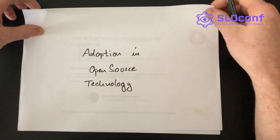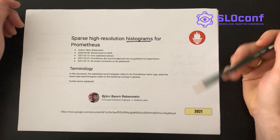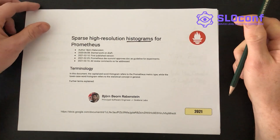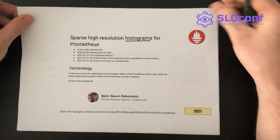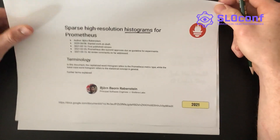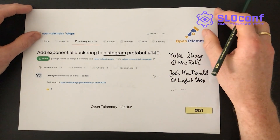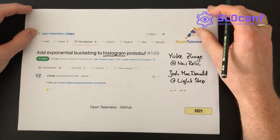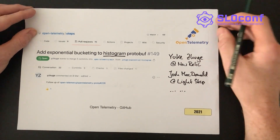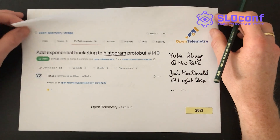The final section covers adoption in open source technology — a very recent development. Björn Rabenstein, also talking at this conference, has a proposal for inclusion of sparse high-resolution histograms in Prometheus, which closely follows the observations we made. He also suggests a logarithmic histogram data structure. Similarly, the OpenTelemetry project is adding a logarithmic histogram data structure to their protocol specification and libraries. We are very happy to see this development, and I personally try to take part in those discussions.